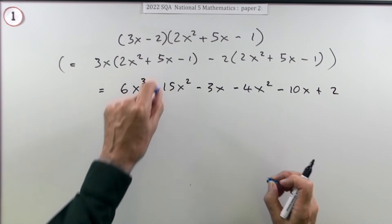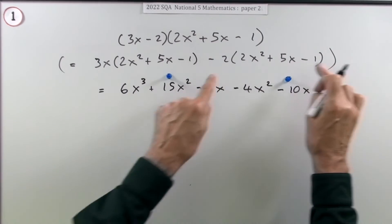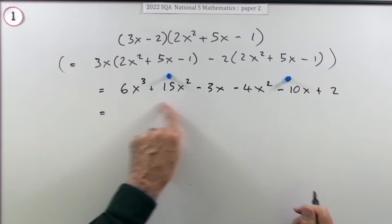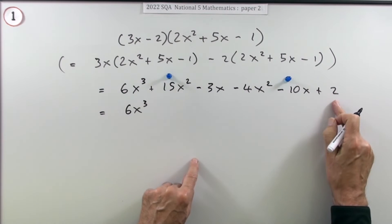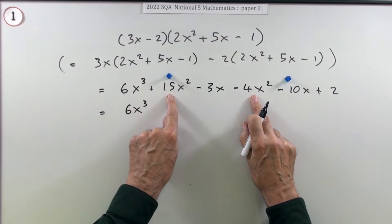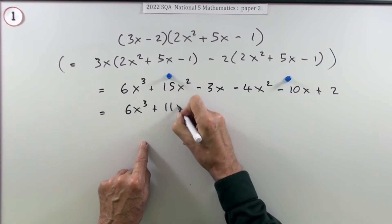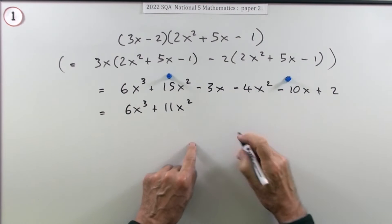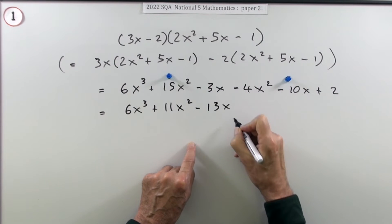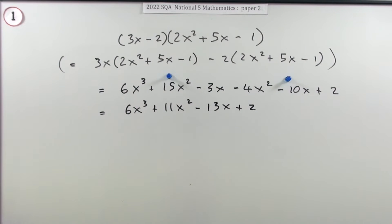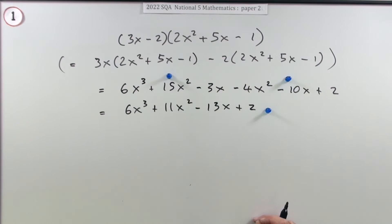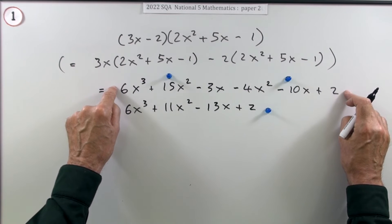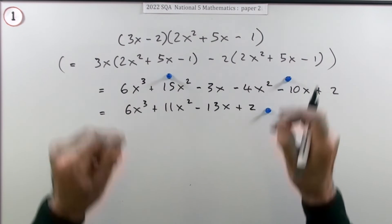Doing that expansion gets two of the marks — one mark for each of those expansions. Now you tidy it up. You've got six terms altogether but only four different types: there's only one 6x³; only one constant; two x² terms — 15 take away 4 is 11x²; and two x terms — 3 and 10 that makes minus 13x; and the constant is 2. That gets the final mark. According to the marking scheme, if you just put those four terms down correctly you'd also get three out of three, but you're best writing this out first in case you make a mistake.